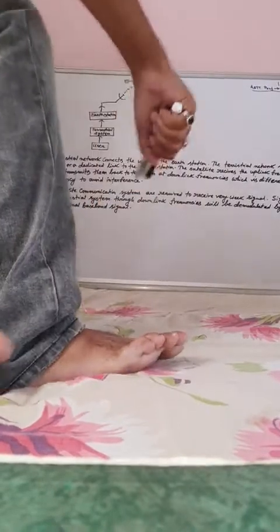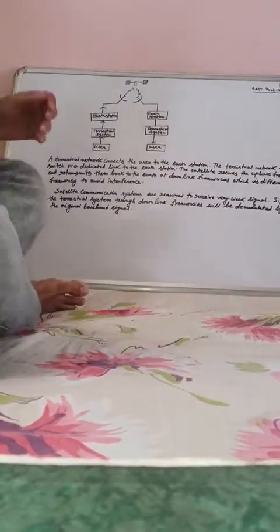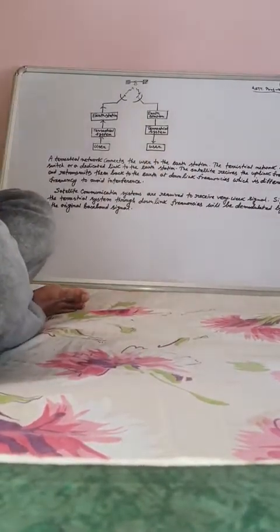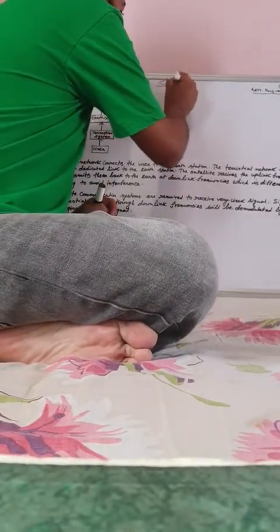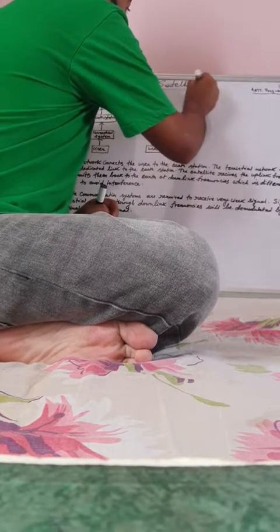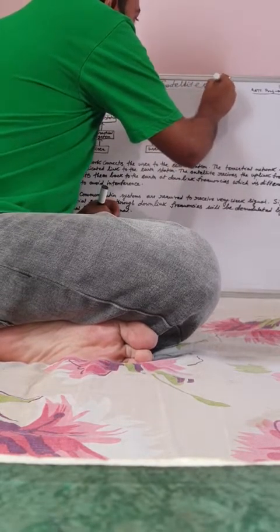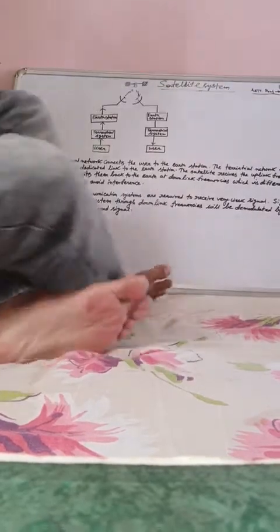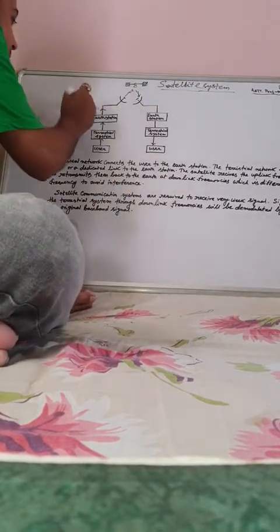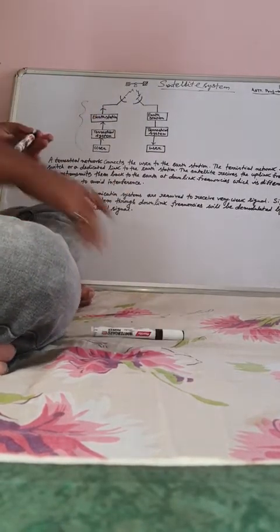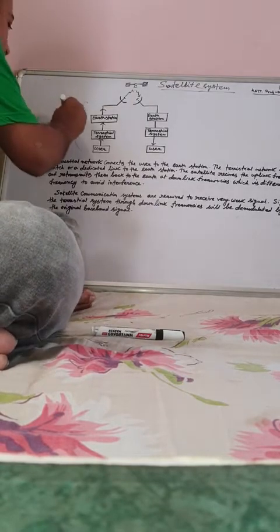Hello students. This is a diagram of a satellite system. This system consists of two parts. This part is dedicated for the satellite system.